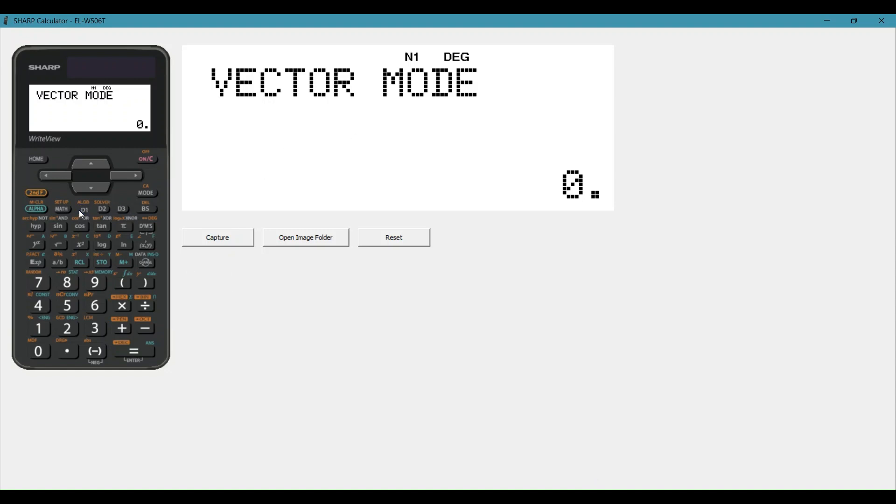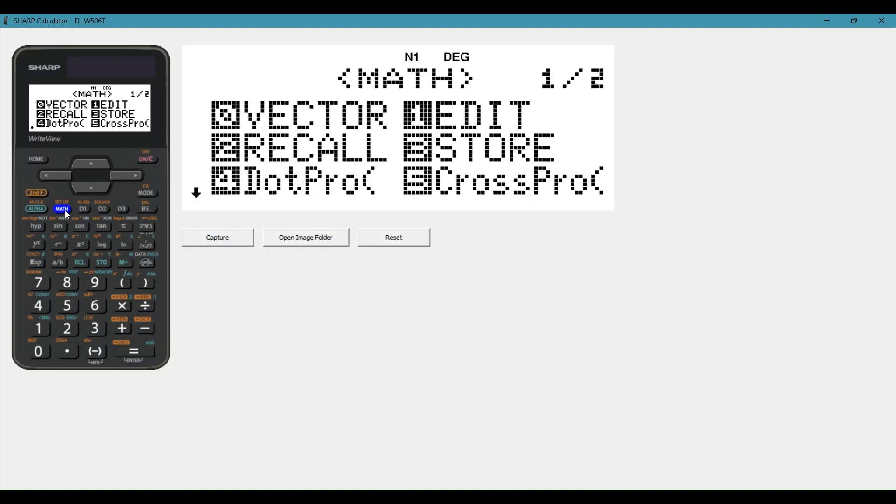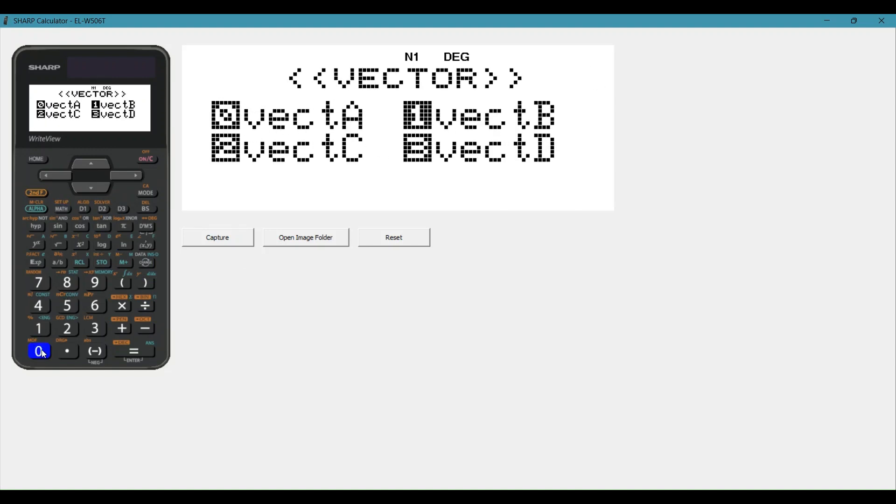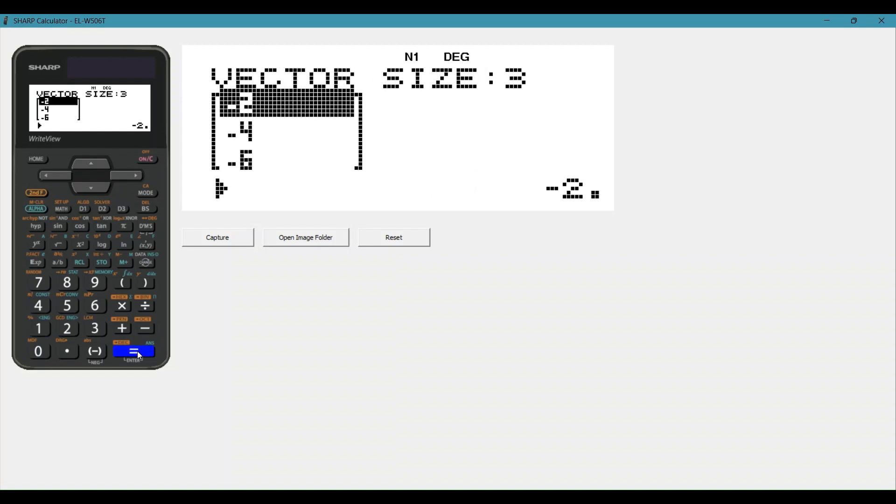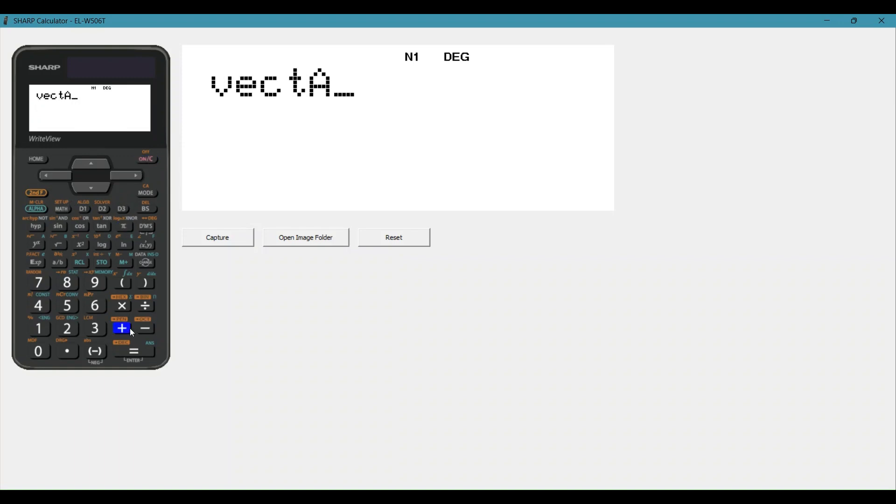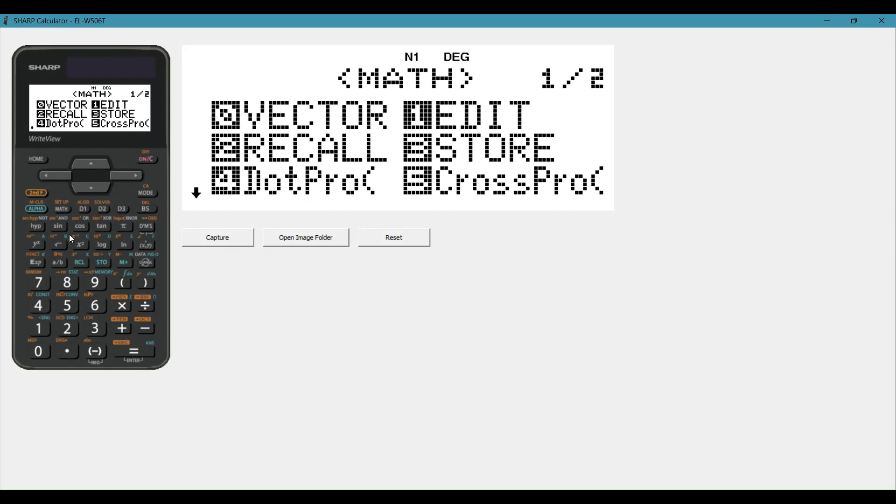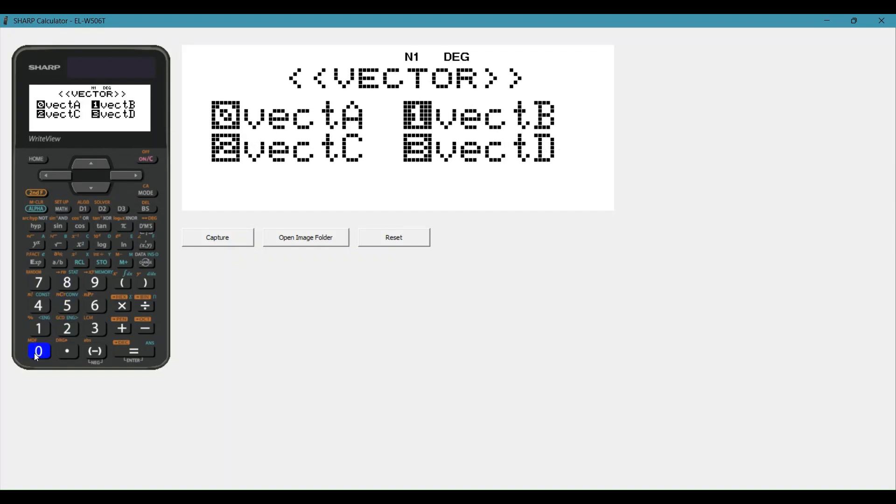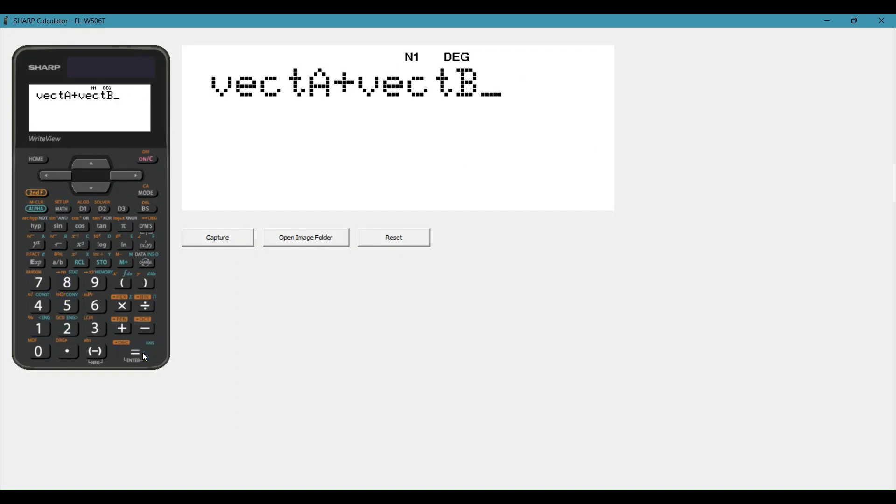We're going to say vector A minus vector B. We didn't save as a shortcut, so we're going to do it the long way around: math zero and then one for vector B, and you'll see our negative solutions. If we added the two together, it would be vector A plus math call vector one, and equals.